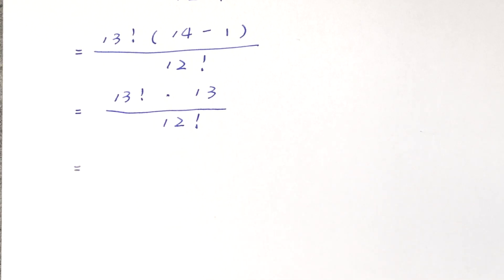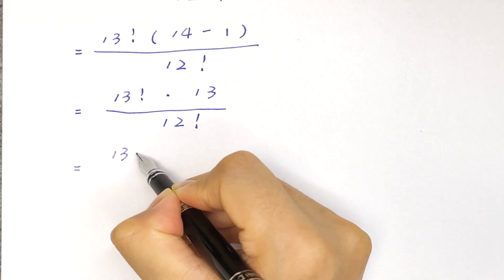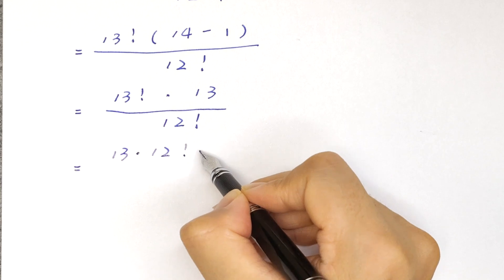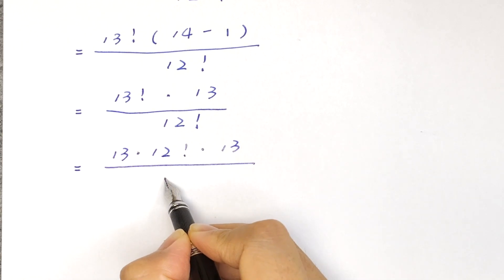It will be equal to 13 factorial, which is the same as 13 times 12 factorial, then times 13 divided by 12 factorial.